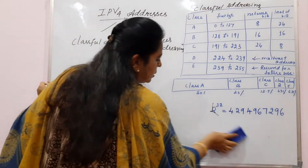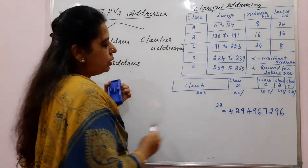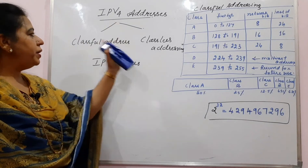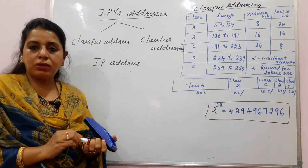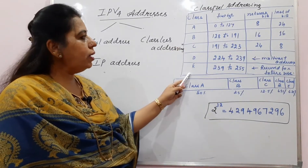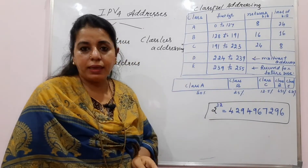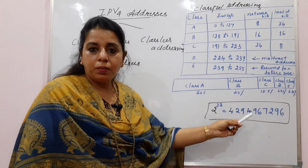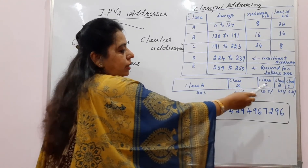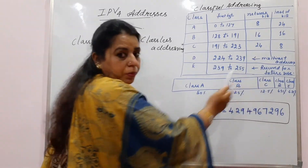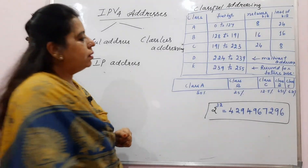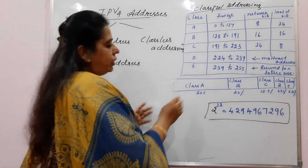With 32 bits used to represent an IPv4 address, 2 to the power of 32 — nearly 4 billion addresses — are possible. IPv4 addresses are classified into classful and classless addressing. Classful addressing consists of 5 classes: Class A, Class B, Class C, Class D, and Class E. Of the total address space, 50% is reserved for Class A, 25% for Class B, 12.5% for Class C, 6.25% for Class D, and 6.25% for Class E.